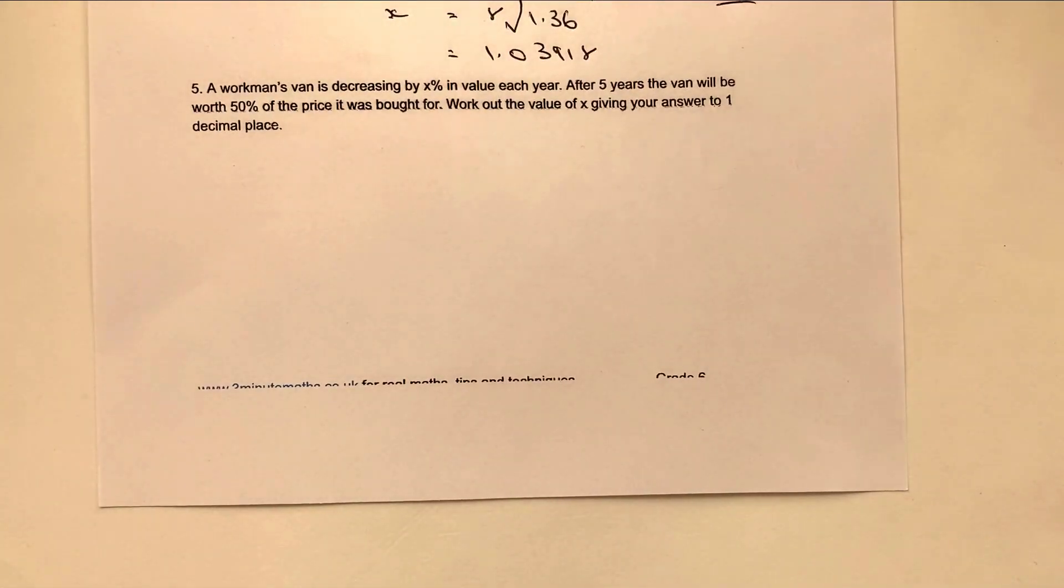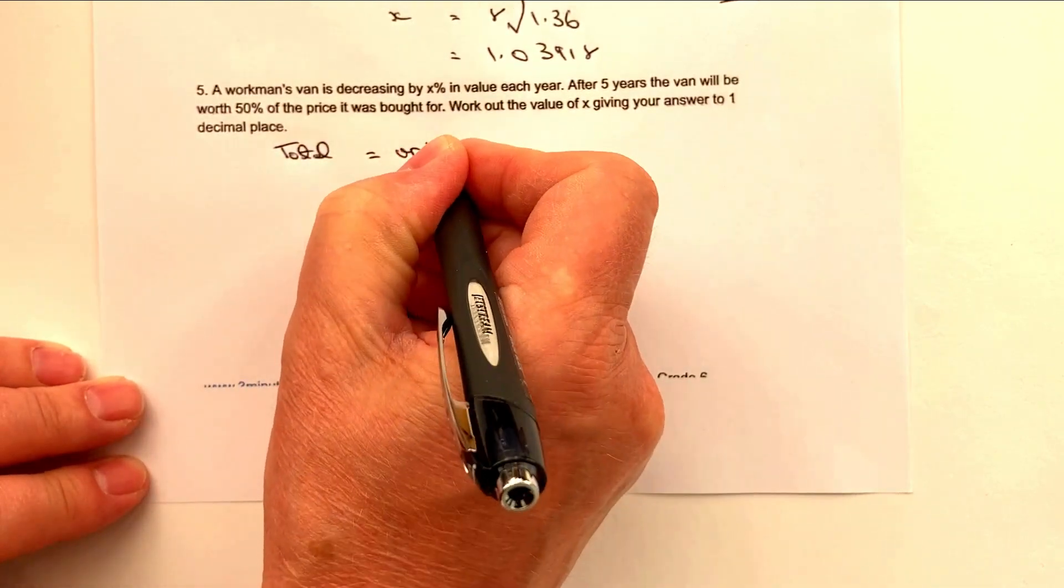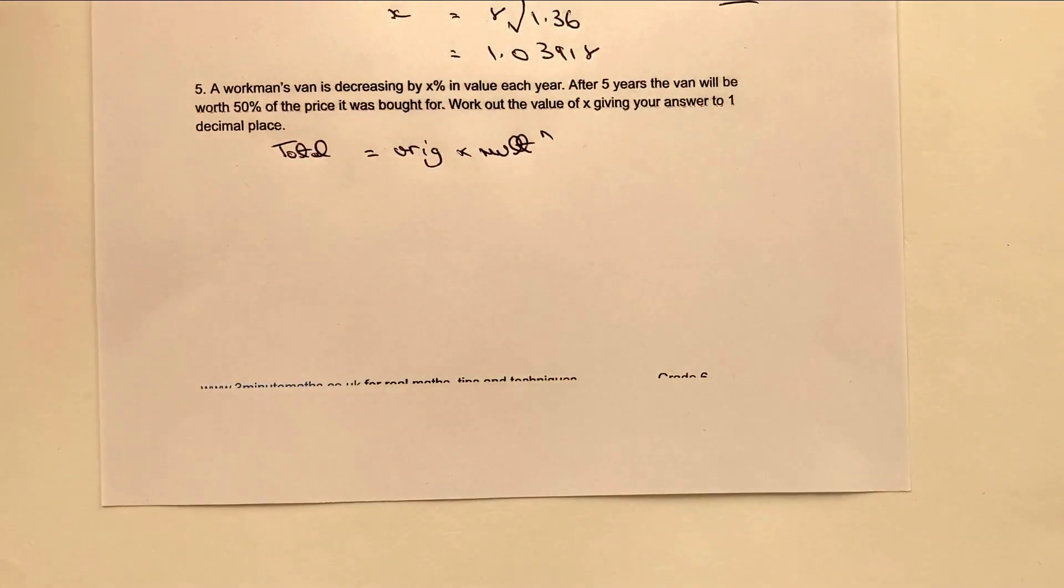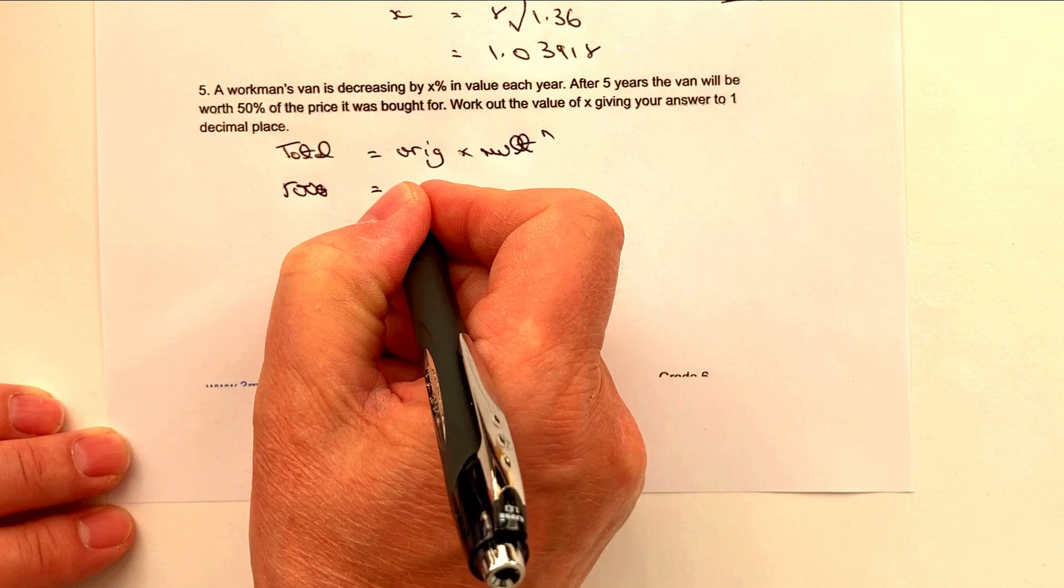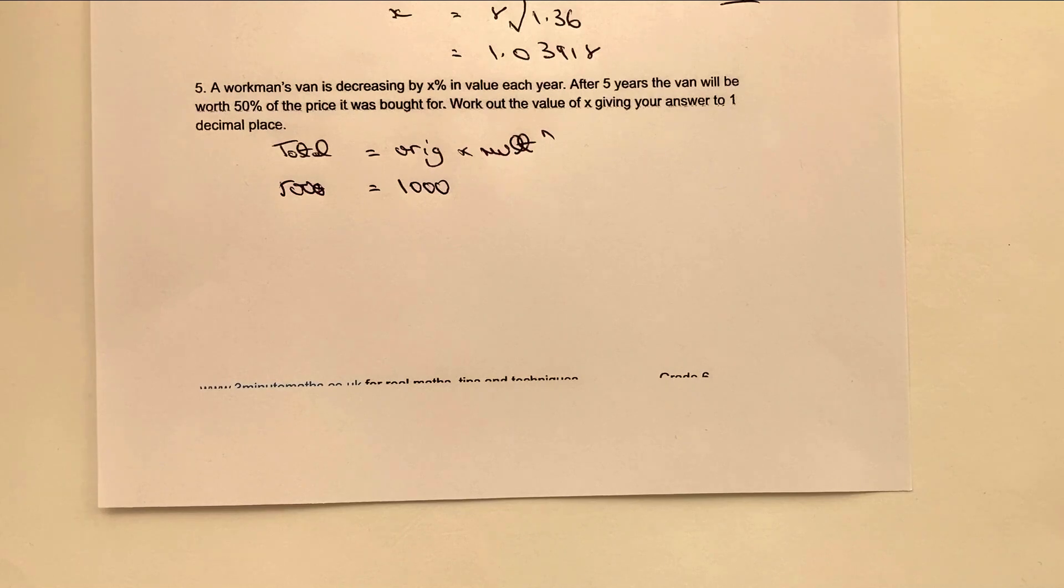Question number five. A workman's van is decreasing by X percent in value each year. After five years, the van will be worth 50 percent of the price. Work out the value of X. Well, I'm actually going to use the same thing as I have done before, where I'm going to say that the total is equal to the original times the multiplier to the value of N. So if it's decreased by X percent and after five years it's worth 50 percent of the price, let's say for instance that after five years it's worth 500 pounds. And the original was 1000 pounds.